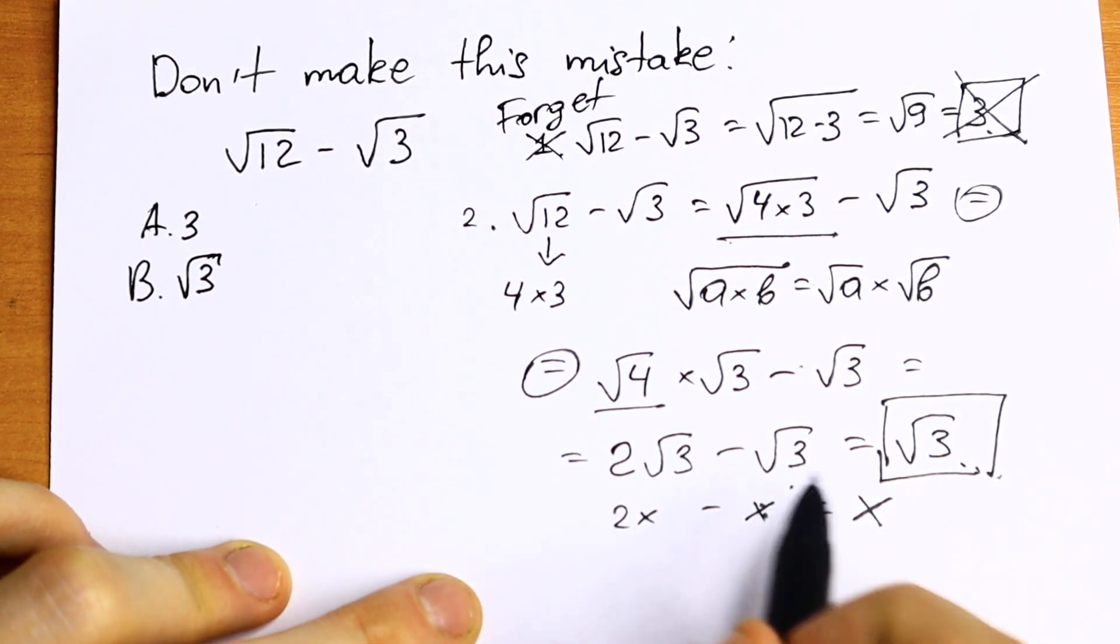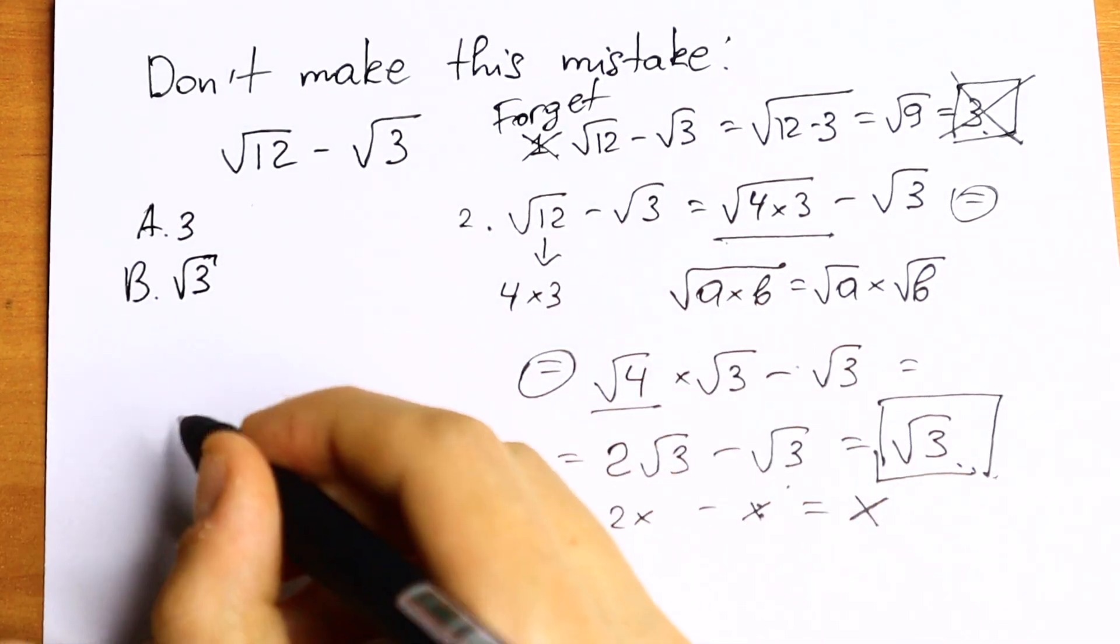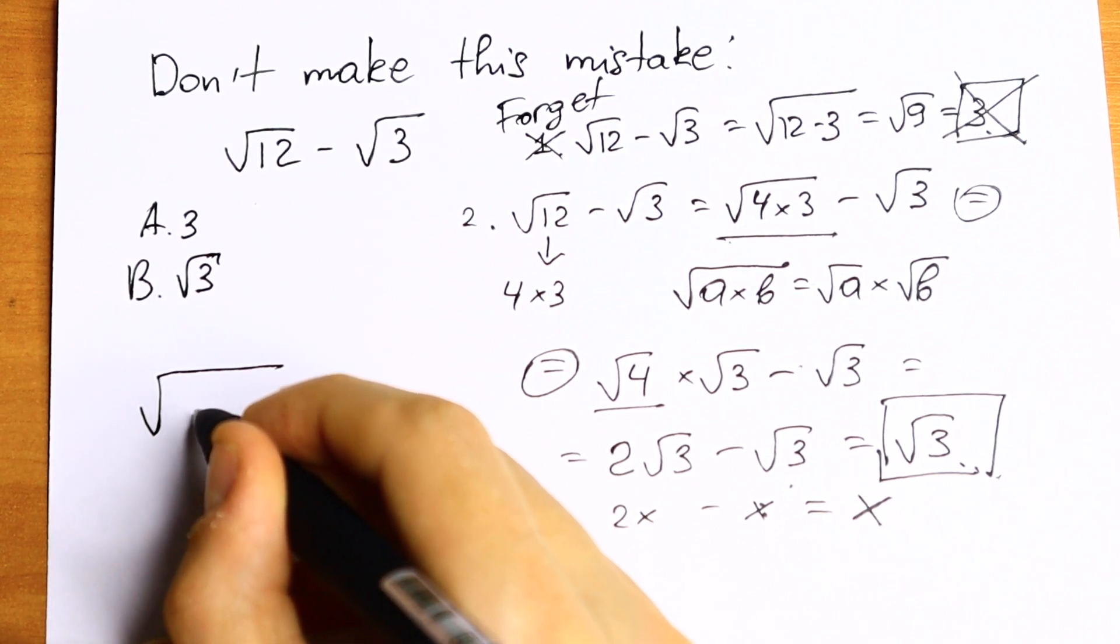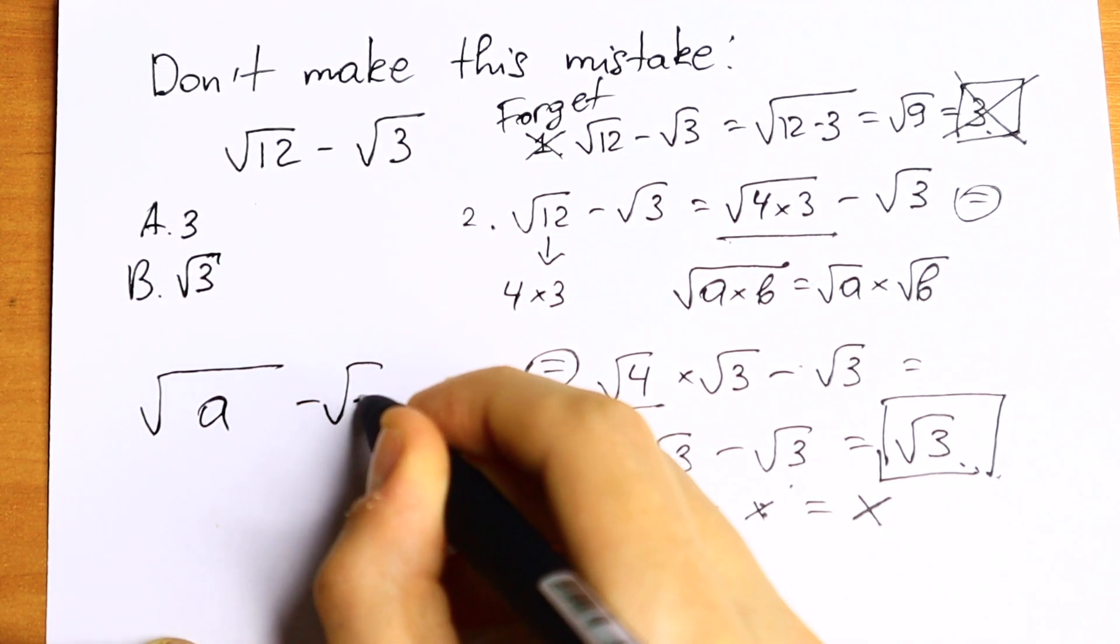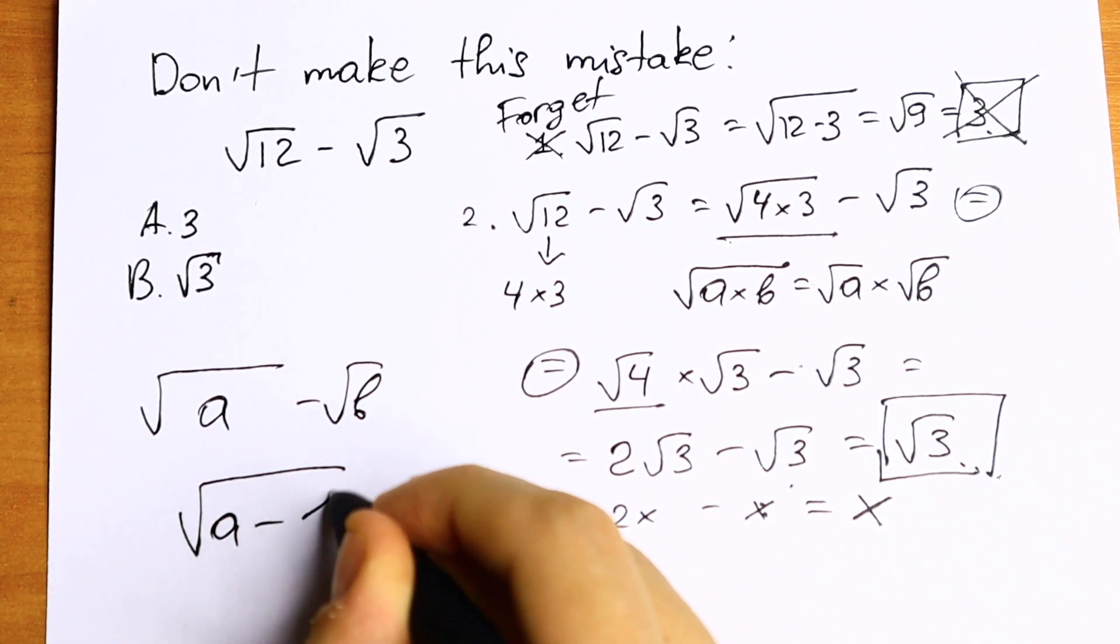Learn this way, remember this way, because we cannot use square root of a minus square root of b as square root of a minus b.